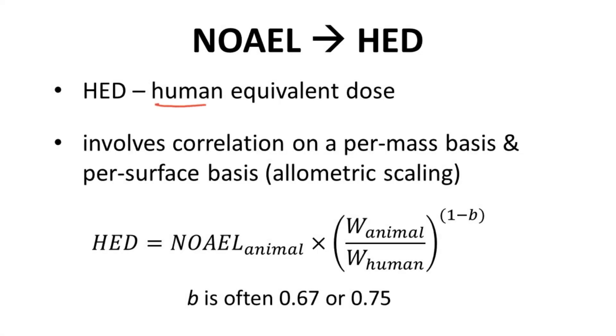HED stands for human equivalent dose. NOAEL can be converted to HED through both factoring the mass difference between a preclinical species and human and an exponential factor that accounts for surface area differences between species and is a form of allometric scaling. A common equation for HED is shown.